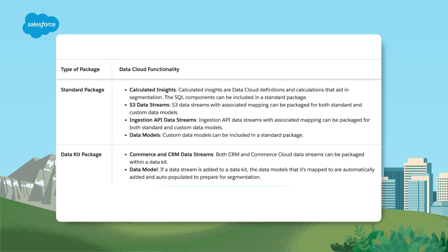Data Cloud supports both unmanaged and managed packaging. For managed packages, we recommend you use versioning and push upgrades. Use package versions to upgrade the components in newer package versions without breaking functionality for existing users. Use the push upgrade feature to automatically upgrade to a newer version of the package, ensuring that all of your orgs are on the same or latest version. You should use a package to distribute Data Cloud information to other orgs. Currently, Data Cloud supports the packaging of data streams, data models and calculated insights. You should also consider using data kits, which help you streamline the package creation and installation process.